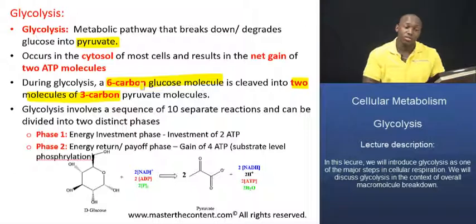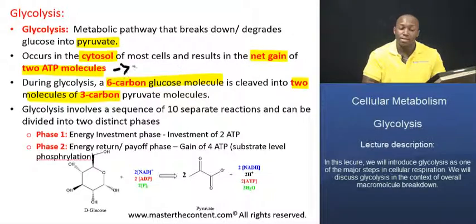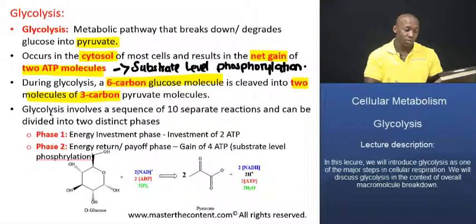Glycolysis occurs almost exclusively in the cytosolic interface and it results in the net gain of 2 ATP molecules — what I referred to as substrate-level phosphorylation. It happens anaerobically, without the input of oxygen, as a consequence of the breakdown of that glucose molecule.